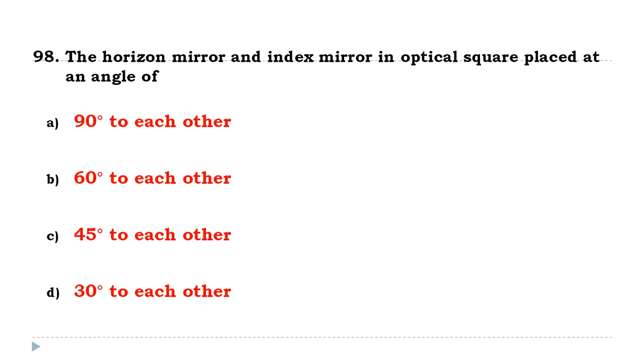The horizon mirror and index mirror in an optical square are placed at an angle of 45 degrees to each other.